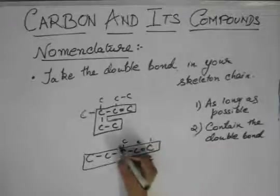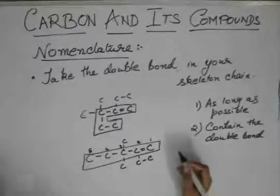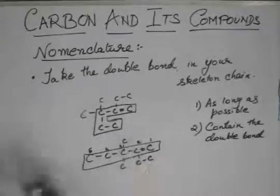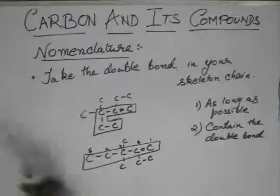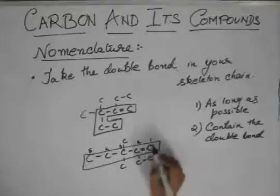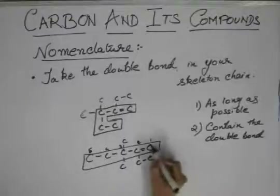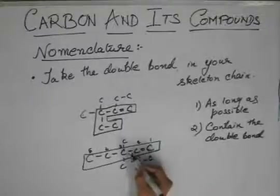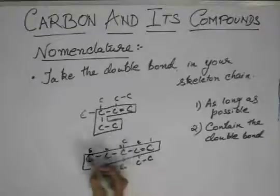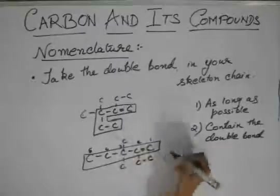We start numbering from the double bond. We number one, two, three, four, five. The lowest sum rule is also defined by the double bond — we start numbering from the end closest to the double bond. If the double bond were at a different position, we would still start from whichever end is closer to it, no matter what the sum rule says.